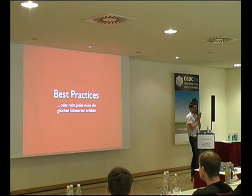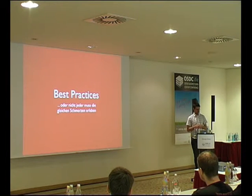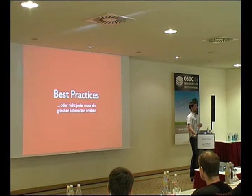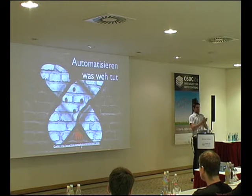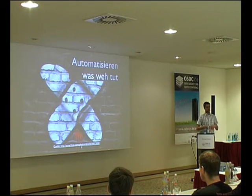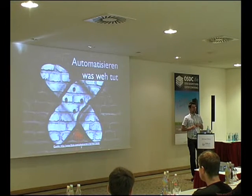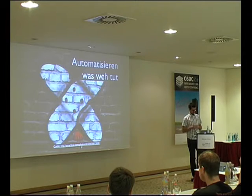Ein paar Best Practices: wenn man solche Projekte angeht, hat man natürlich Schmerzen. Jenkins macht nicht 100% glücklich, es gibt definitiv Ecken und Kanten. Wie fängt man am besten an? Automatisieren, was weh tut. Nicht mit dem anfangen, was am besten ausschaut, sondern das, was am meisten schmerzt. Wenn man Umgebungen hat, wo man Software für mehrere Architekturen und Distributionen kompilieren muss, dann muss man mit dem anfangen, was dabei am meisten wehtut – zum Beispiel, wenn man von einer eigenen Box abhängig ist, die man immer zur Verfügung braucht.